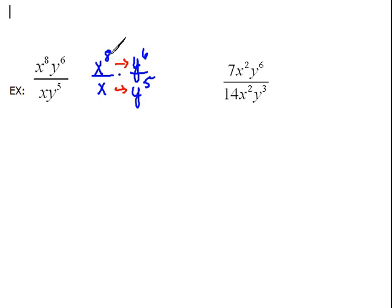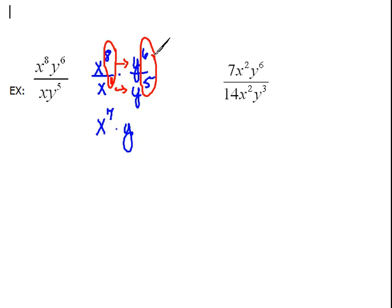We have x to the 8th over x. We are dividing like bases, so we subtract those exponents. This exponent on x is an understood 1, so that means we have x to the 8 minus 1, which is 7th power. Then here we also have dividing like bases, so we subtract the exponents: y to the 6th minus 5 is 1 power. We can rewrite that as x to the 7th times y.